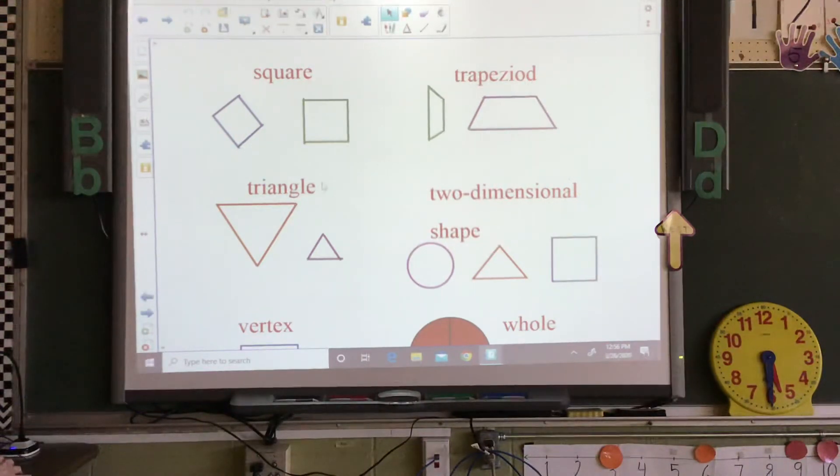Our next shape is a triangle. It's a closed two dimensional shape with three sides. One, two, three sides and three vertices. One, two, three.